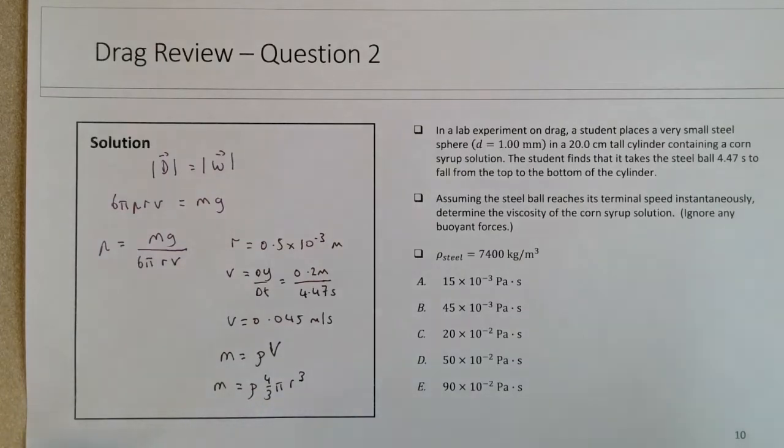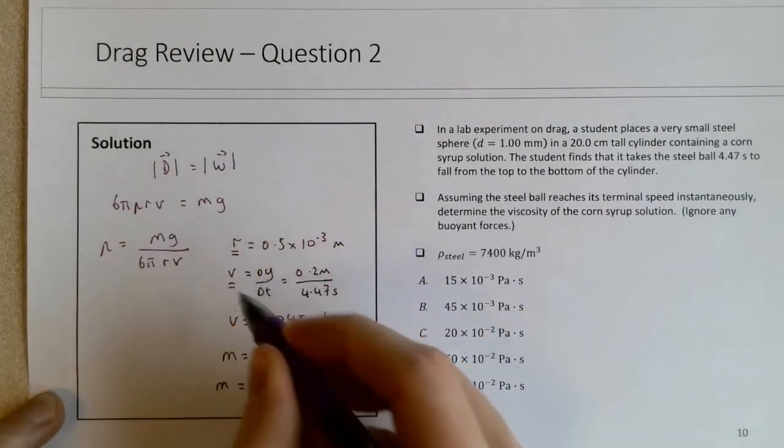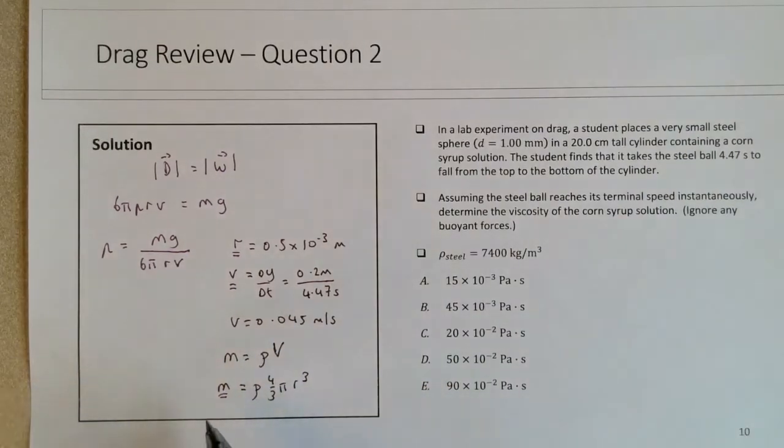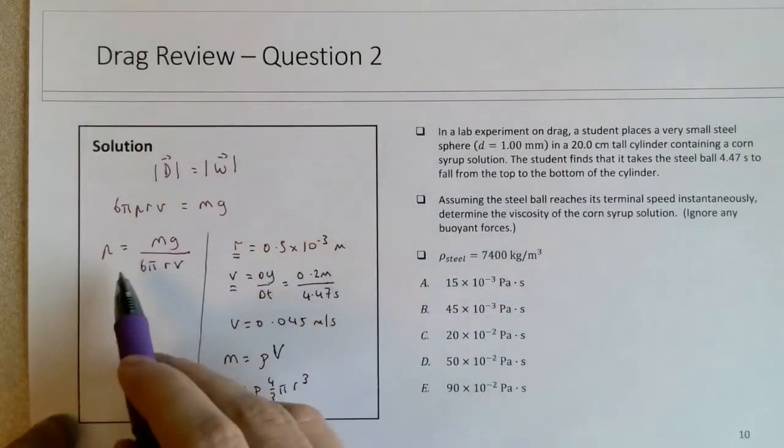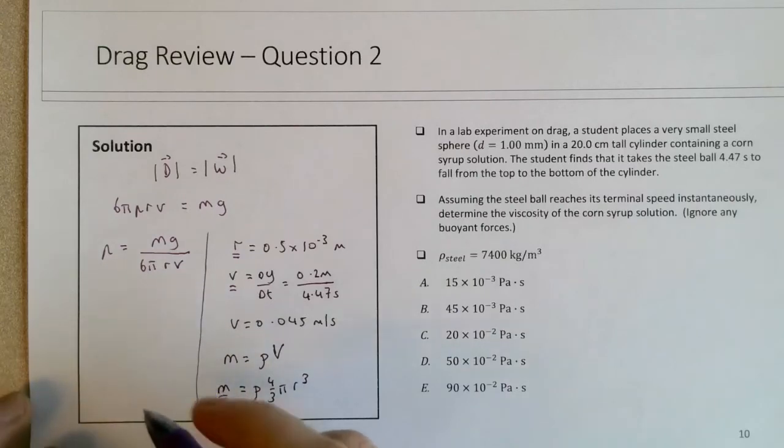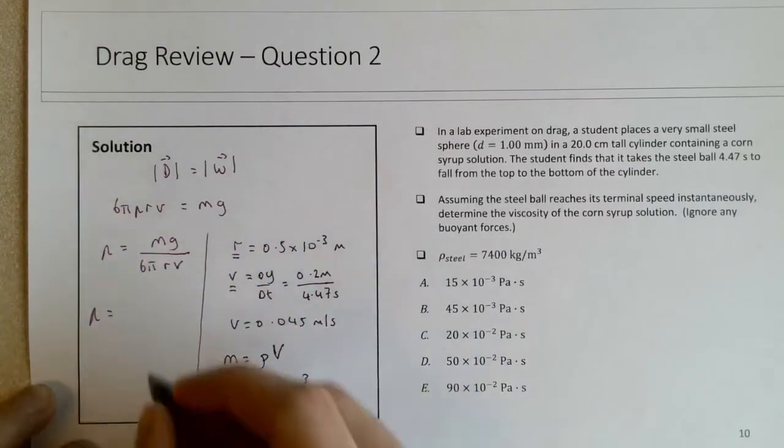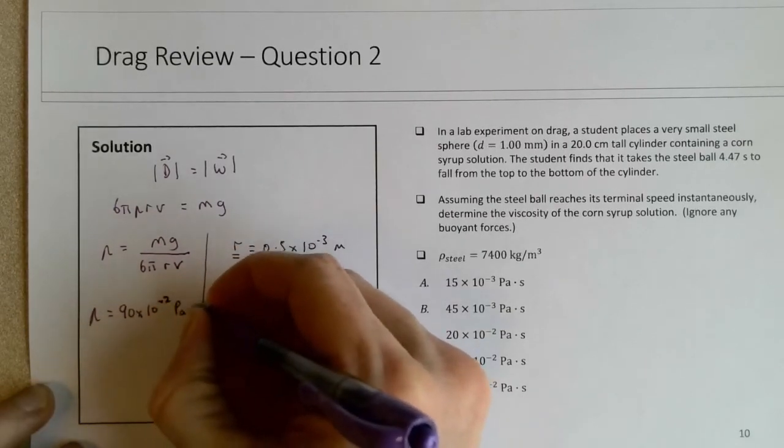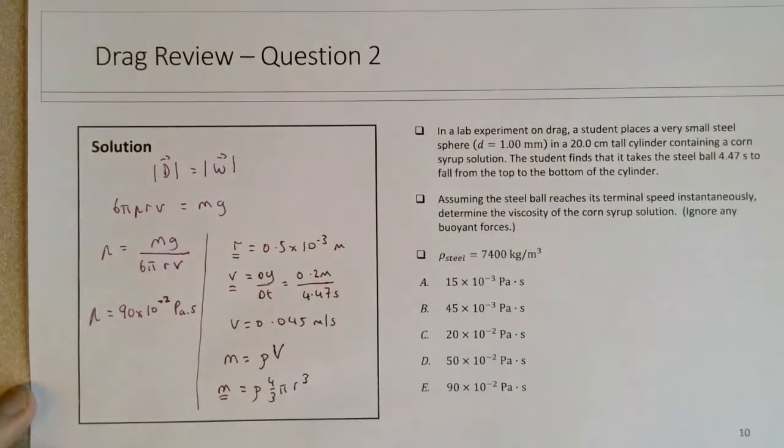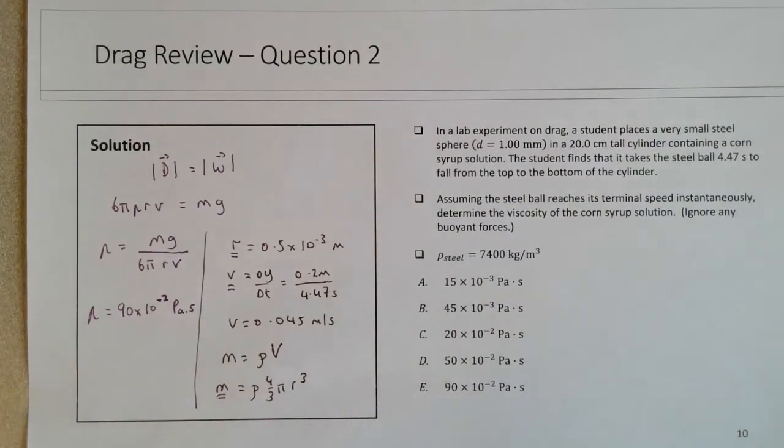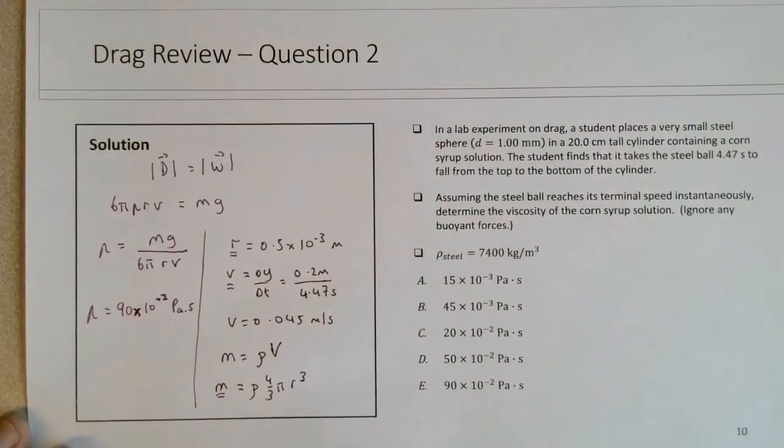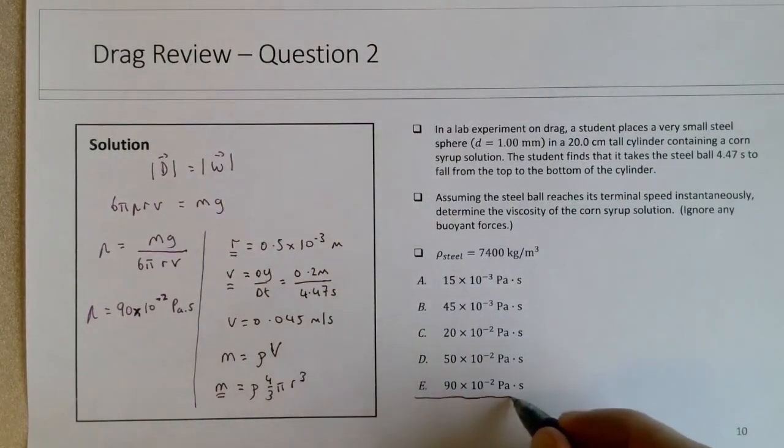So we have the r, we have the v, and we can solve for the mass. Once you substitute these quantities into this expression for mg over 6πrv, the η should work out to be choice E, 90 × 10⁻² pascal seconds, which should give you the viscosity. It's definitely significantly more viscous than water and corn syrup, and this is a reasonable value for viscosity, so choice E is the correct answer.